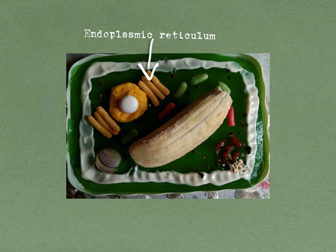The endoplasmic reticulum can either be smooth or rough, and its general function is to produce proteins for the rest of the cell to function.